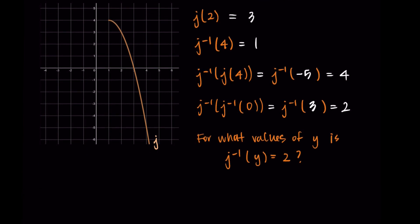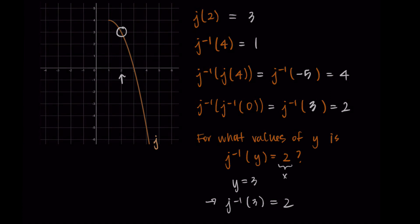Lastly, for what values of y is j inverse(y) = 2: the inverse takes in y values and outputs x values, so 2 is an x value. Taking 2 as an x, I see y = 3 is the corresponding output, so j inverse(3) = 2, meaning y = 3 is the solution. Those are some examples of evaluating inverses using tables and graphs. Thanks for watching and I'll talk to you in the next one.